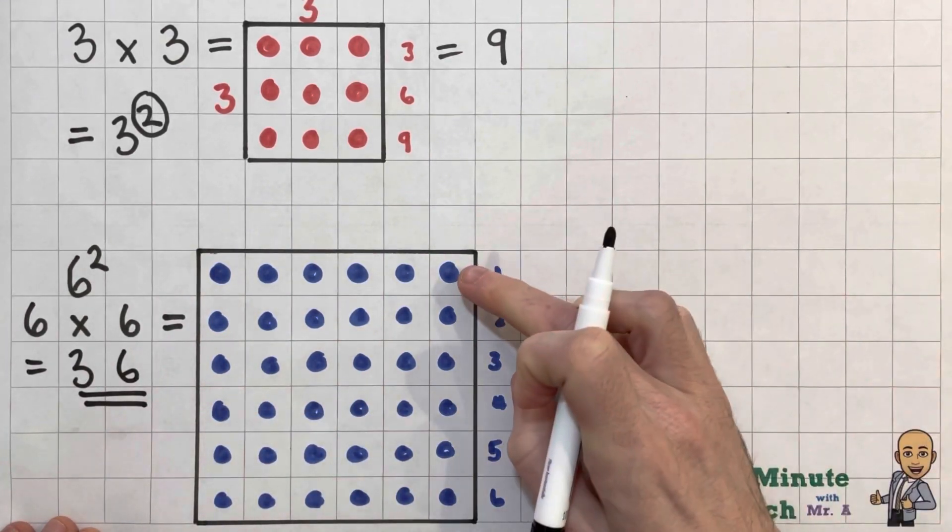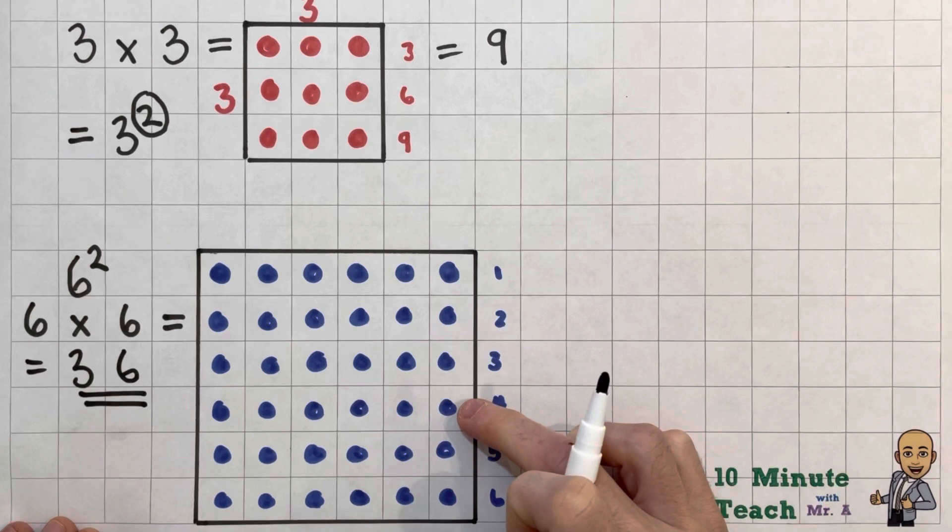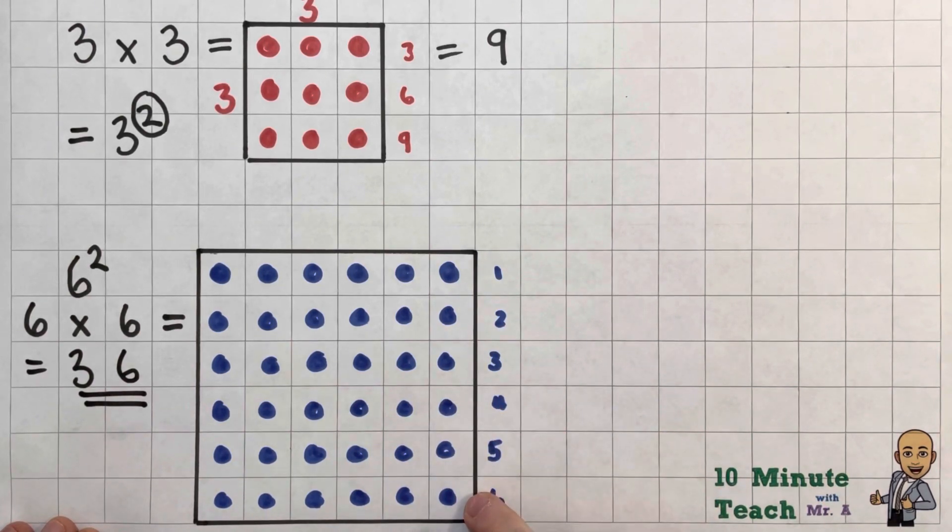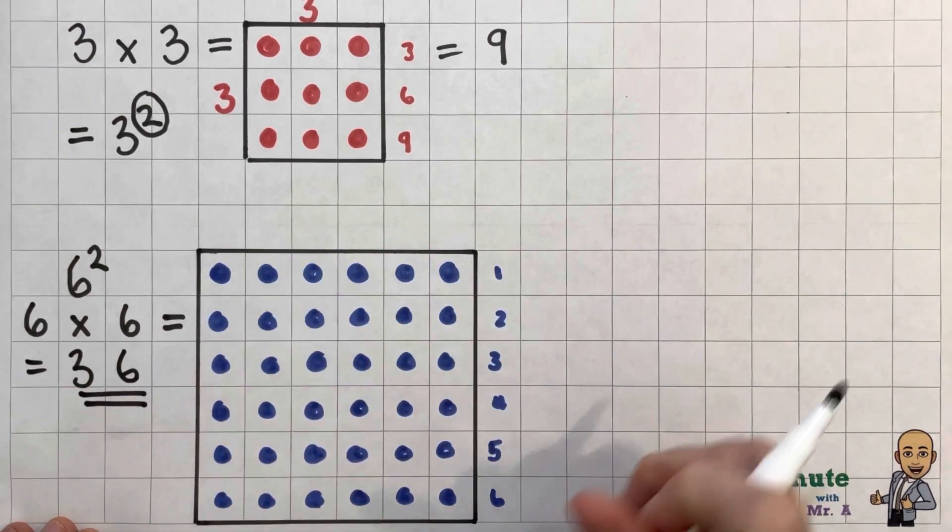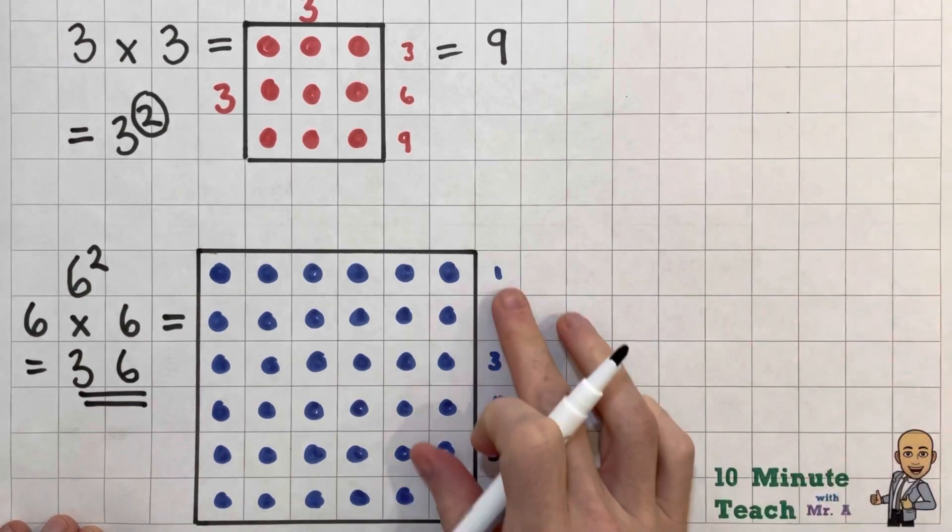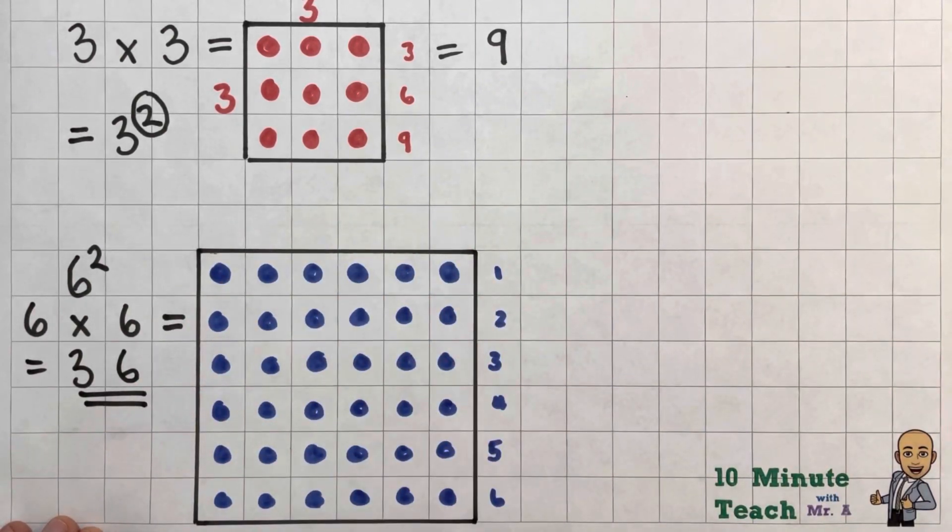36. There we are. So 6, 12, 18, 24, 30, 36. If you use the skip counting song, I'll put a link in the description below. It makes it really easy to see. 6 sixes are 36.